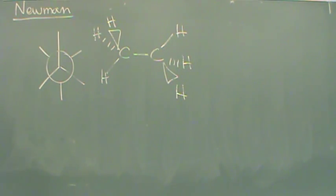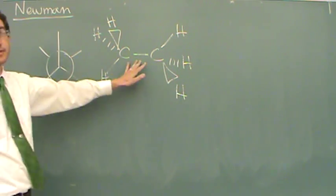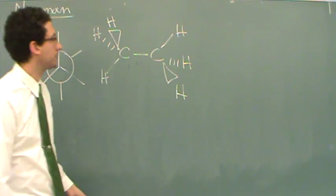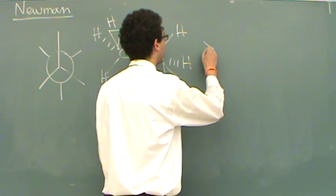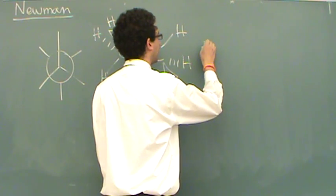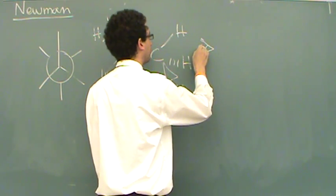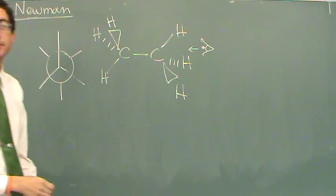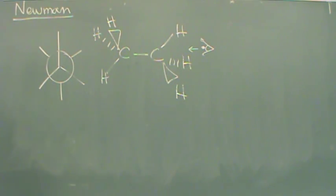We're going to take a look at something called a Newman projection. If you took a look at this, this is an ethane molecule. If you put your eyeball right here, and there's your beautiful eyelashes, and you're looking in that direction towards the ethane molecule...